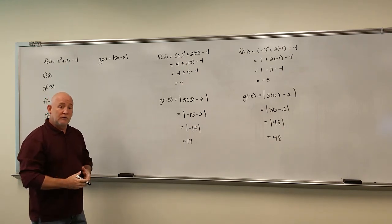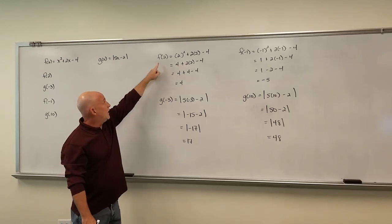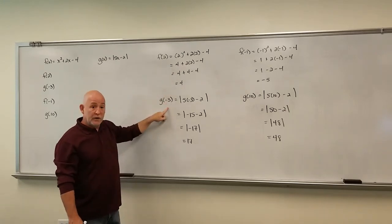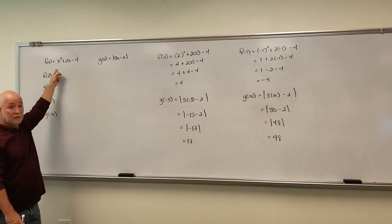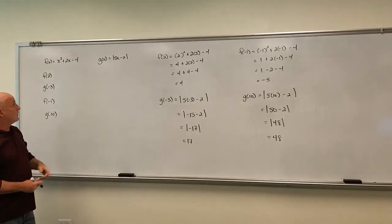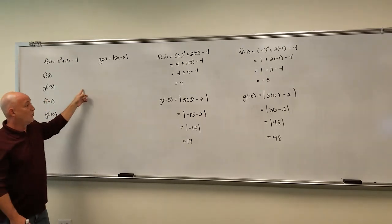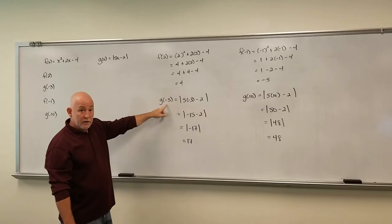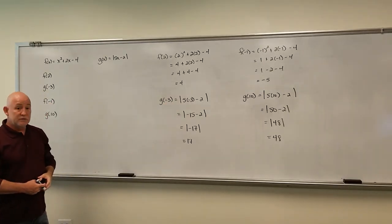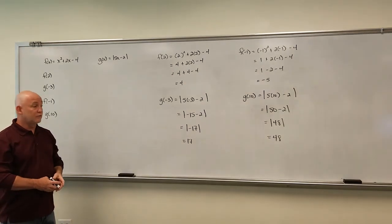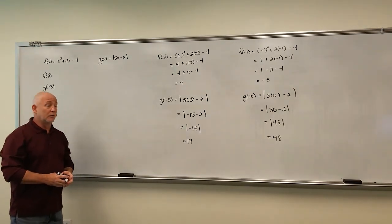So when you're dealing with function notation, you find the function name, whatever it is, and replace all the placeholders with whatever you're plugging in. Now most of the time, you're given the placeholder as an x, but these could have been defined any other way. It could have been g(w), or g(y). It doesn't matter. You're just replacing the placeholder with whatever the value you want to plug in. All right, so function notation is not going away. We're going to use this for the rest of our math careers, so make sure that you understand how to appropriately use it. Thank you.